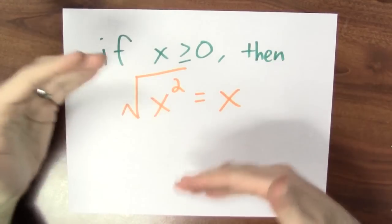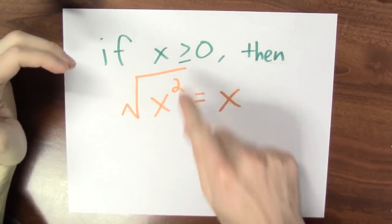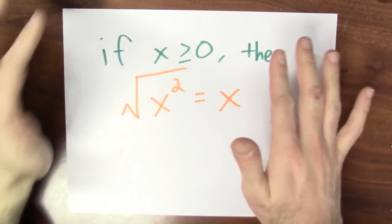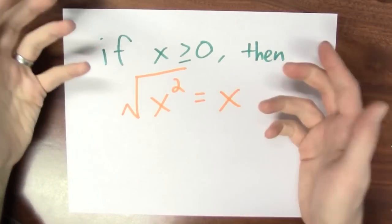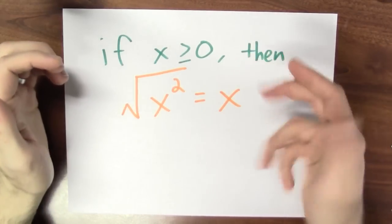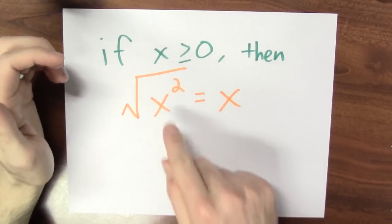Now, what happens when we compose the inverse trig functions with trig functions? Before complicating matters by thinking about trig functions, let's think back to an easier example, the square root and the squaring function. Just like trig functions are not actually invertible, the squaring function is not invertible because multiple inputs yield the same output. So we had to define the square root to pick the non-negative square root of x.